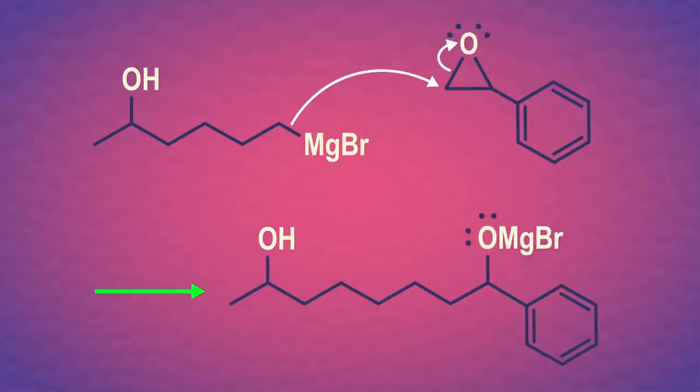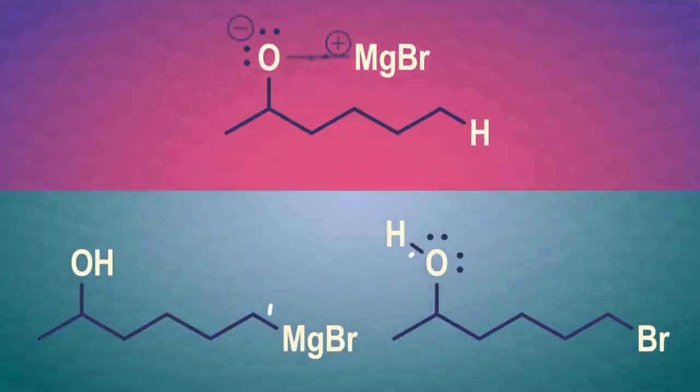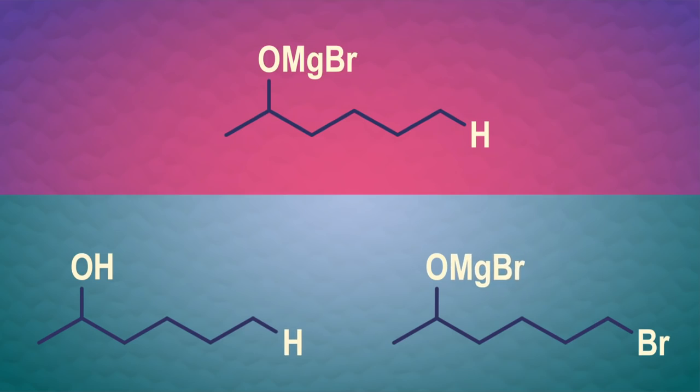Grignards will react with alcohols in an acid-base reaction. So as soon as we form the Grignard, we won't get the reaction we want. Our Grignard molecule could react with itself, deprotonating the alcohol group on the other end, or it could react with another reactant molecule. Either way, we're nowhere near the product we wanted to make. So we'll need a protecting group.